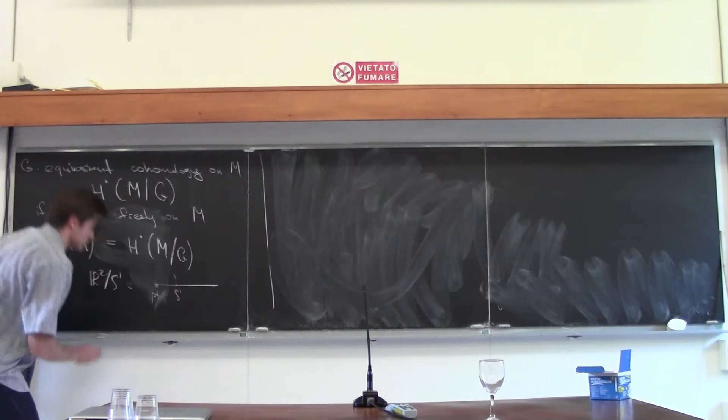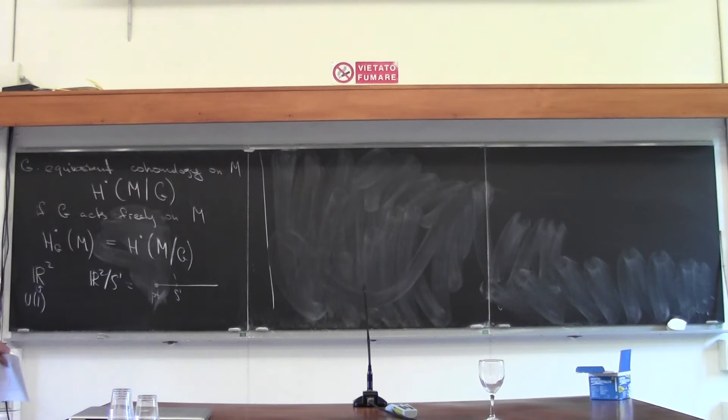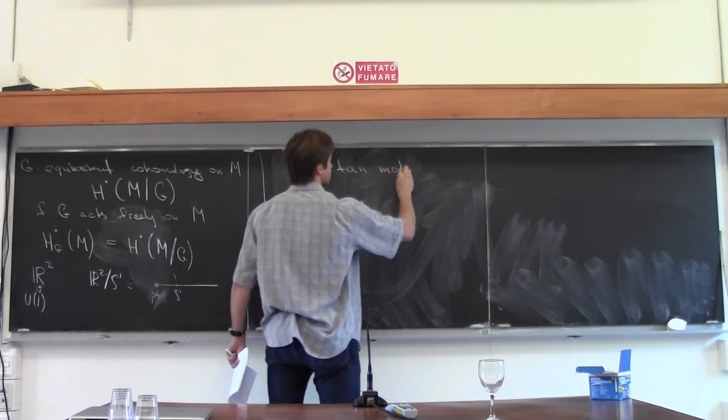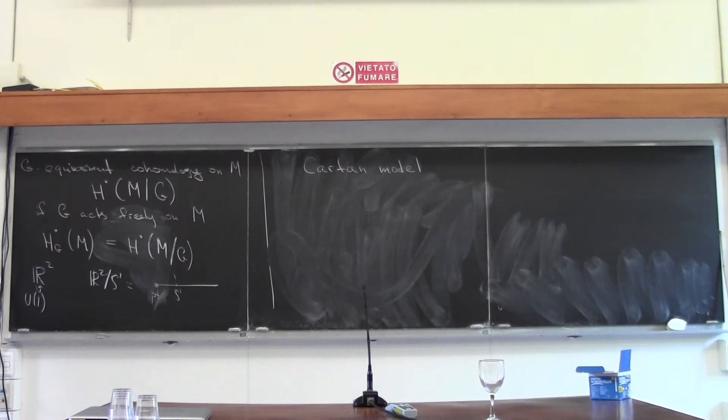There is an abstract geometric definition of equivariant cohomology. But for this lecture, and in the applications to multiple theories, it's easier to work with a concrete model for those equivariant cohomologies — it's called the Cartan model. I'll give you just the definition in terms of the Cartan model rather than the abstract topological definition.